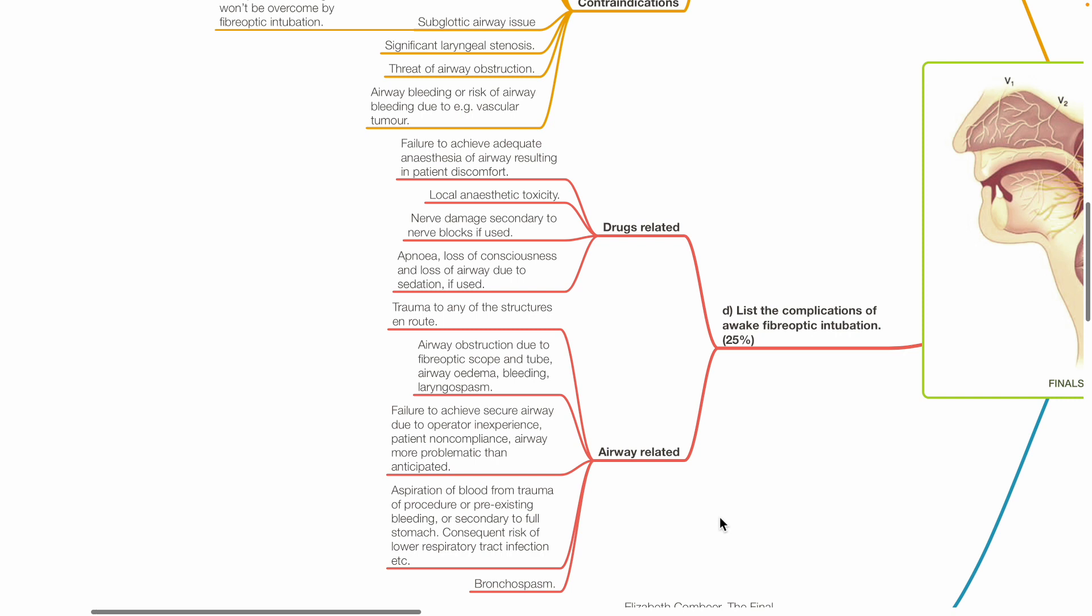D. List the complications of awake fibro-optic intubation. These may be drug related or airway related. Drug related complications includes failure to achieve adequate anesthesia of airway leading to patient discomfort, local anesthetic toxicity, nerve damage due to nerve blocks, apnea, loss of consciousness and loss of airway due to sedation, if used. Airway related complications includes trauma to airway, airway obstruction due to fibre optic scope and tube, airway edema, bleeding or laryngospasm, failure to achieve securing the airway due to operator inexperience, patient non-compliance or airway more problematic than anticipated.